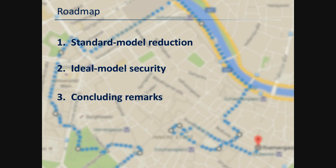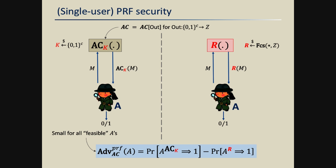Let me start with the more technical contents of this talk, starting with the standard model component of this analysis. The first thing I want to do is formalize our security target a bit more. Recall that the standard PRF security notion requires the construction — in this case the augmented cascade construction with some output function out — to be indistinguishable under a secret key from a truly random function with matching input and output domains.